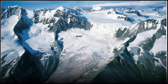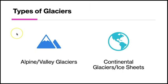The glaciers we see today are associated with Earth's most recent ice age, the Quaternary, which started about two and a half million years ago. Two main types of glaciers are recognized: alpine or valley glaciers, and continental glaciers, also called ice sheets.